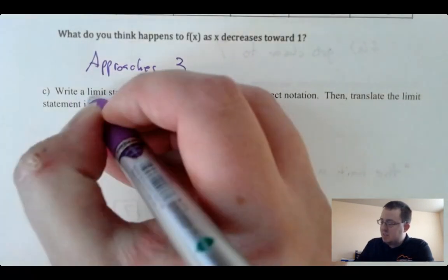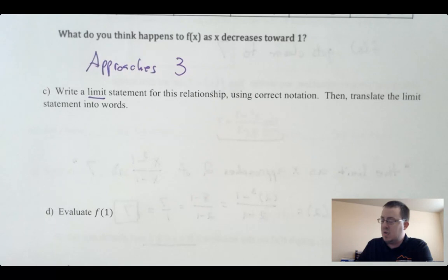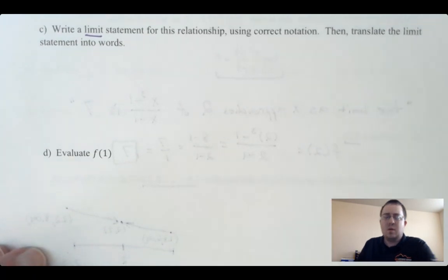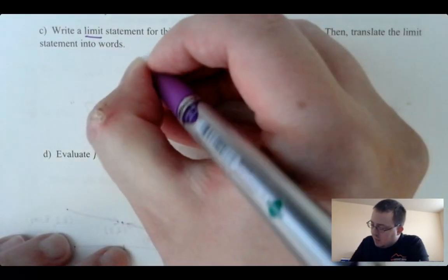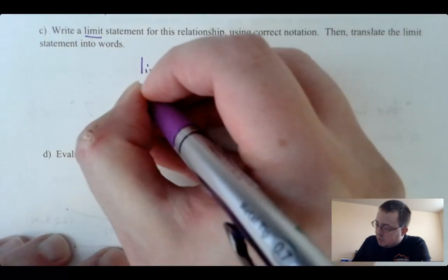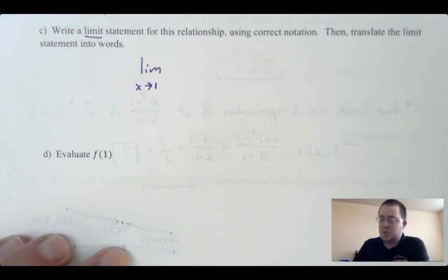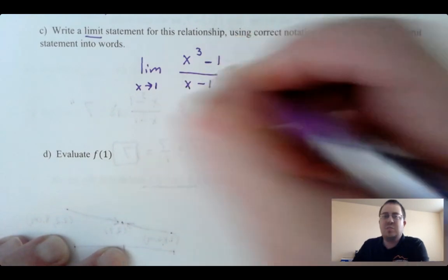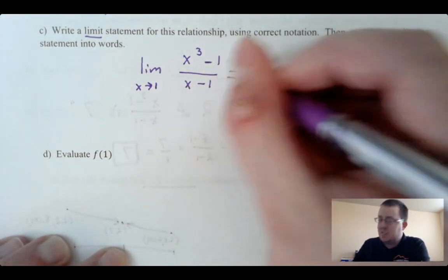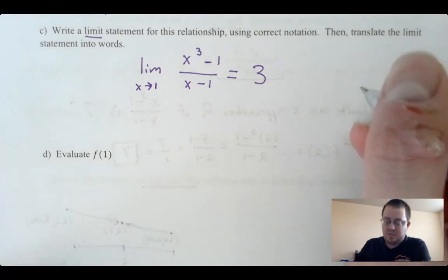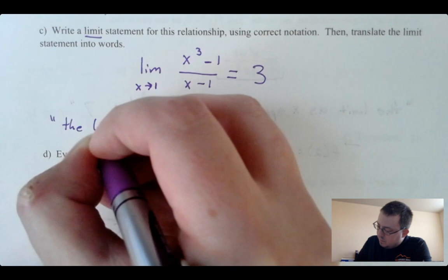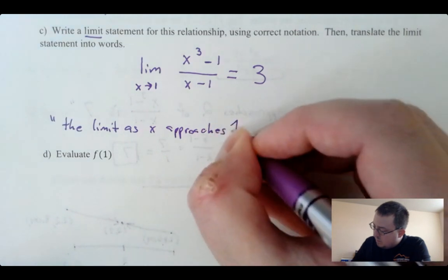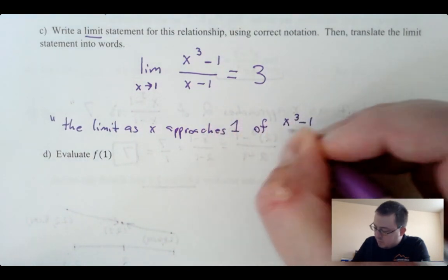I'm going to write a formal limit statement using correct notation. The limit as x approaches 1 — lim with x arrow 1 — of x cubed minus 1 over x minus 1 is equal to 3. In words: the limit as x approaches 1 of x cubed minus 1 over x minus 1 is 3.